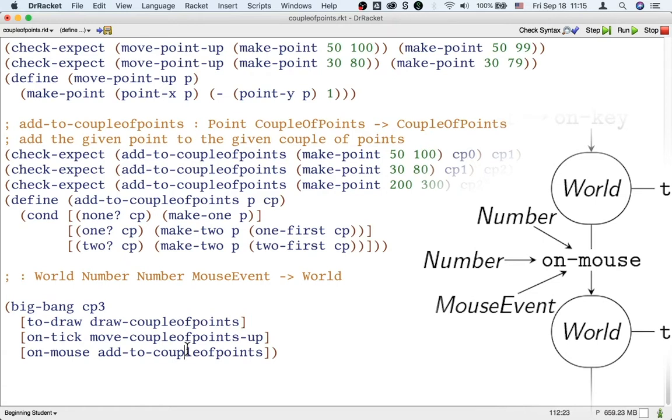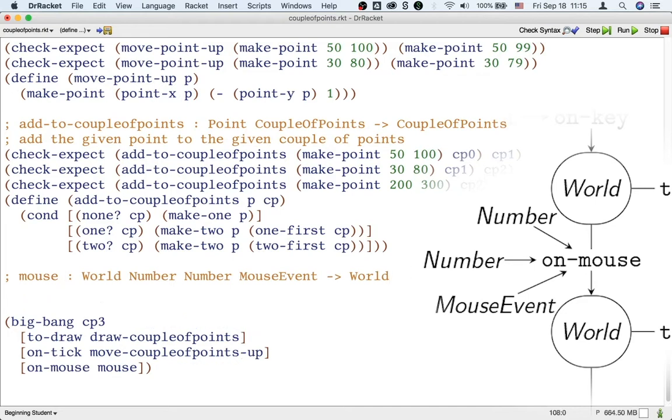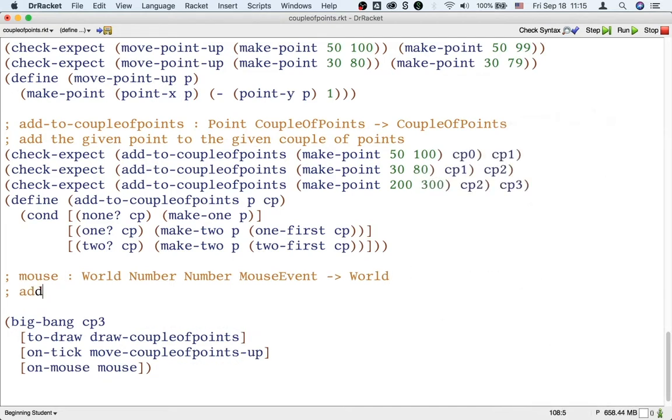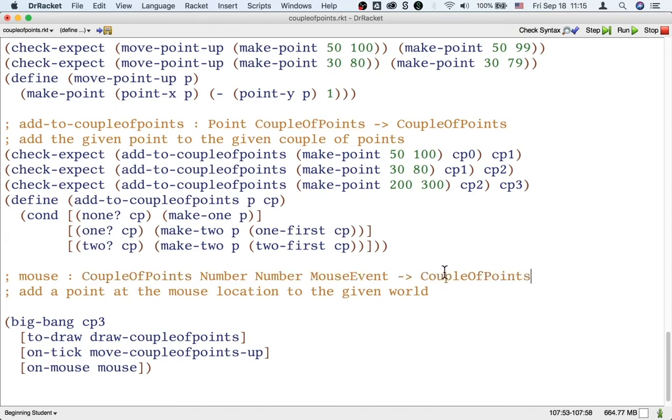Okay, so let's call this function mouse. So, we're going to quickly design a function. It's called mouse, and it's going to add a point at the mouse location to the given world. And remember, a world is a couple of points. We wrote that earlier in a data definition. So, when we write world, we really mean a couple of points. Those are, in the context of this project, equivalent.